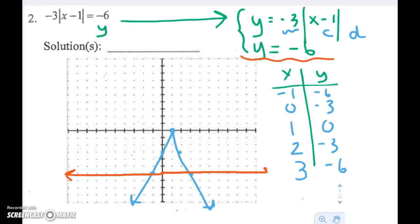And right away, I can identify my intersection points. I have one here, and I have one here. This coordinate is negative 1, negative 6. This coordinate is 3, negative 6.